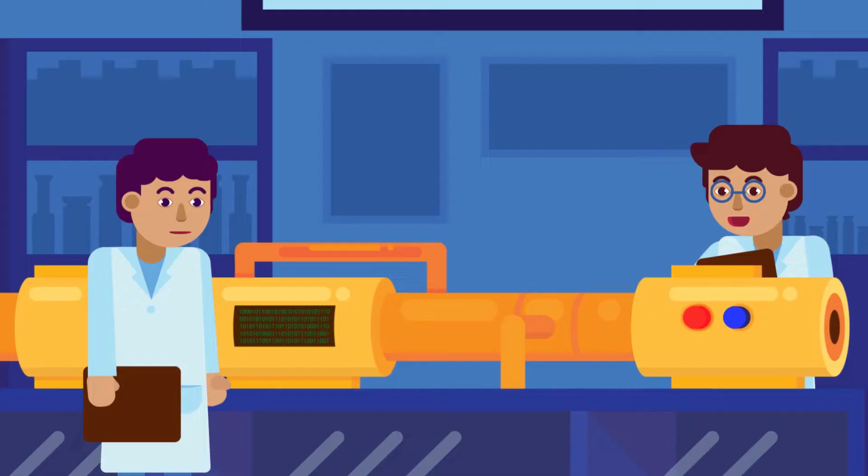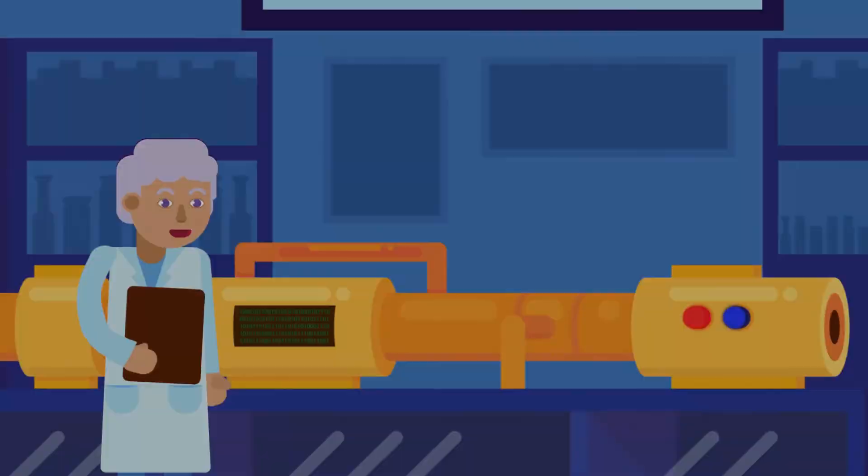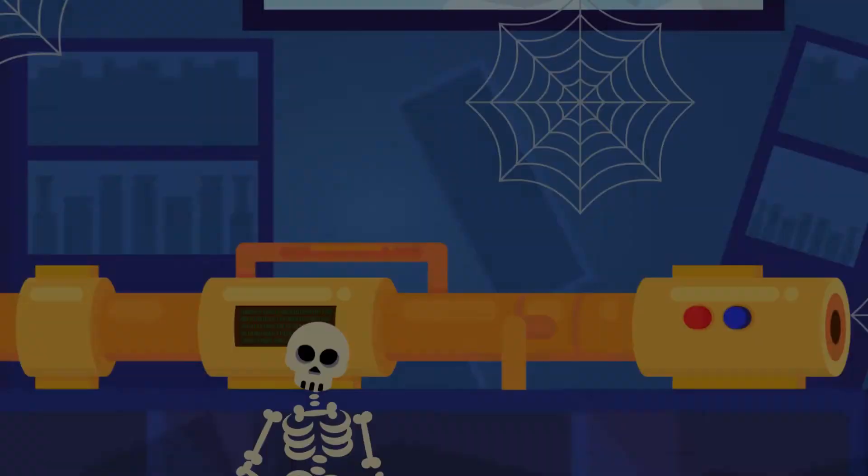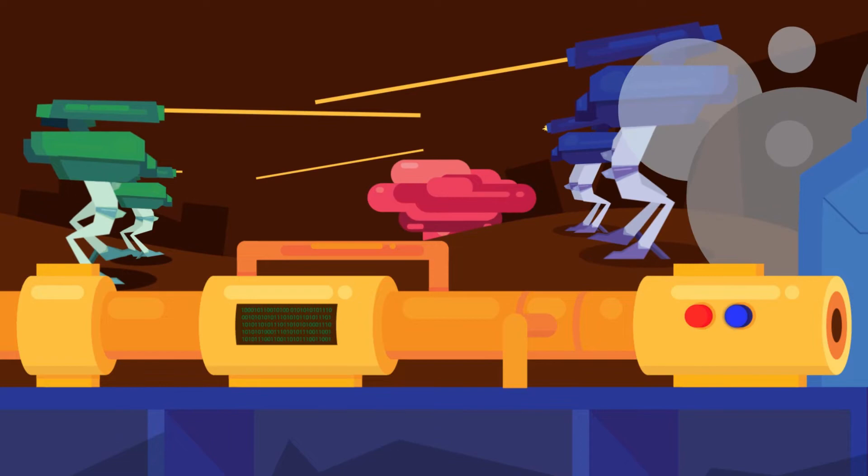Atomic clocks are so accurate that they are known to make a one second error in about...can you guess? If you guessed 100 or 200,000 years, that is incorrect. The clock is known to make a one second error in about 10 million years.